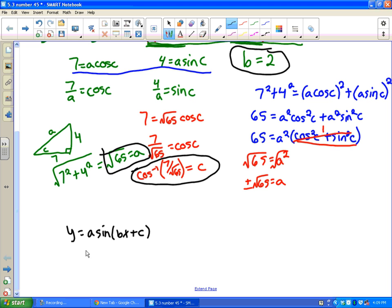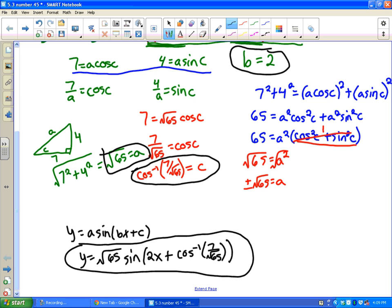So this would be - and actually when we do this, never mind, forget I said that. So this should be y equals the square root of 65, and then sine of b which is 2x, plus our c which was the inverse cosine of 7 over the square root of 65. And that's how I do it. So if you practice this, you will go far in life, or you'll go far on this problem.